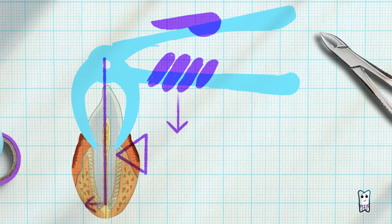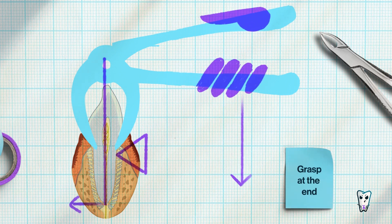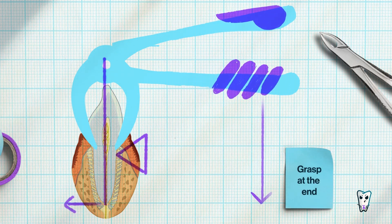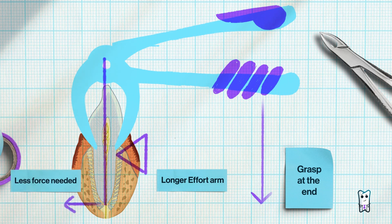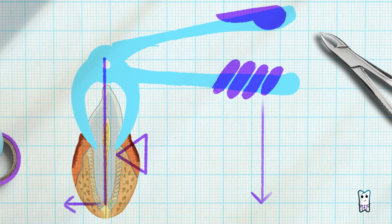Once the beaks are properly positioned, you should grasp the handles at their very end. Why is this? The longer the effort arm, the less force is needed. This means less resistance to your arm, which leads to better control.